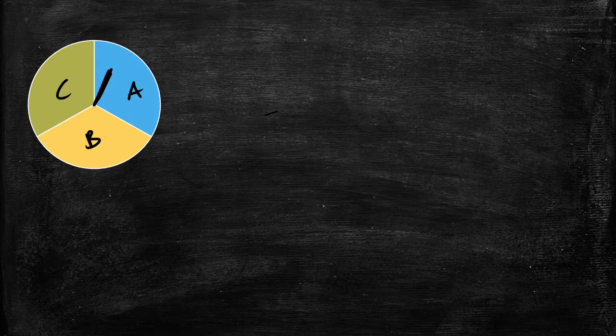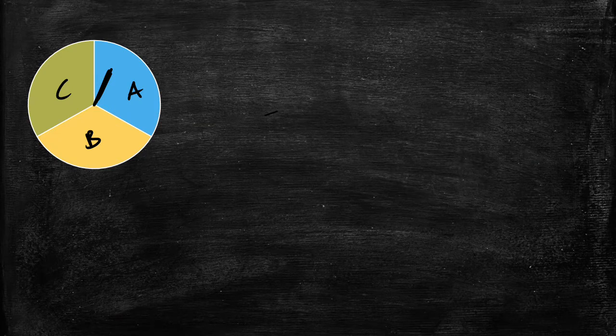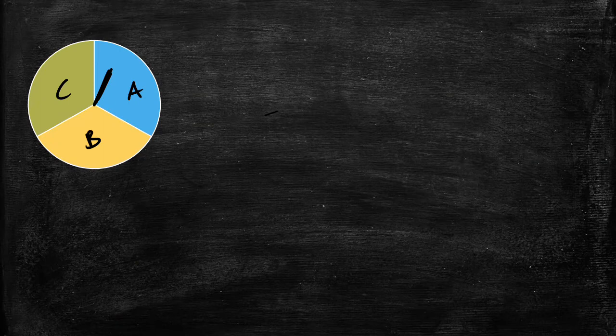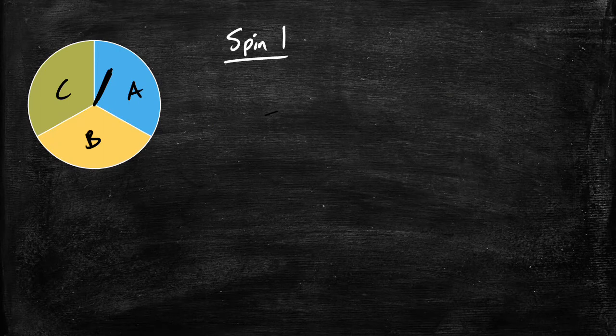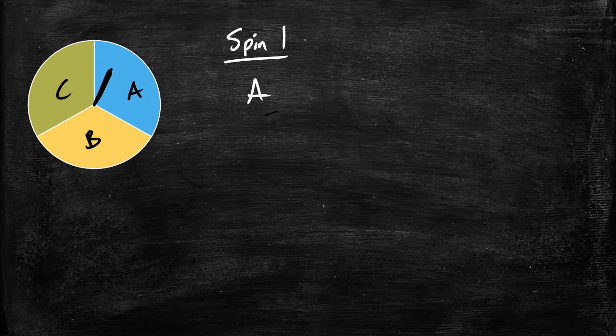What we can do is we can make a probability tree. So we're going to go through the process of figuring out what all the possible outcomes are. So let's say when you spin it the first time you could get either an A, a B, or a C.